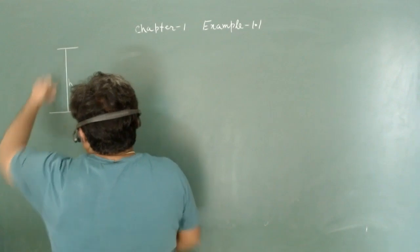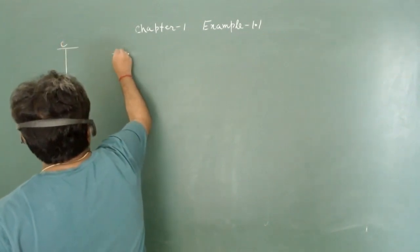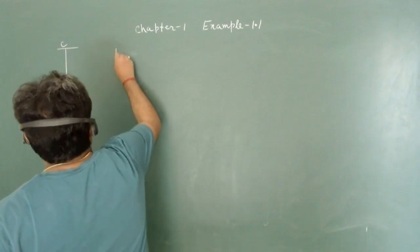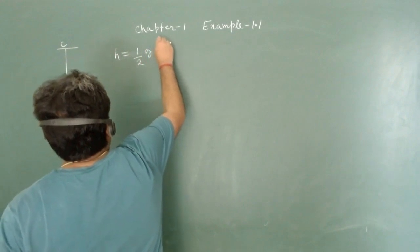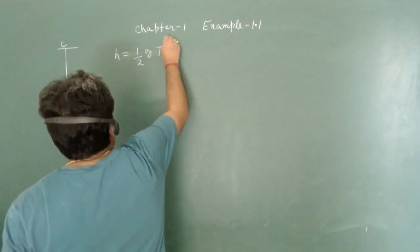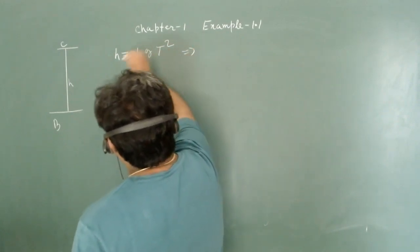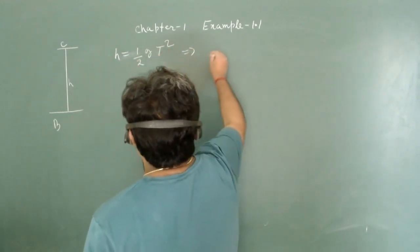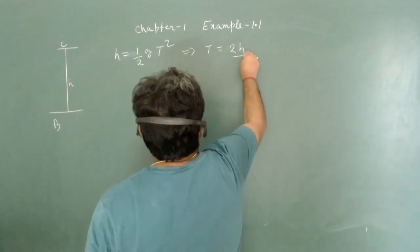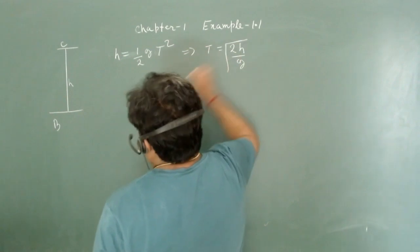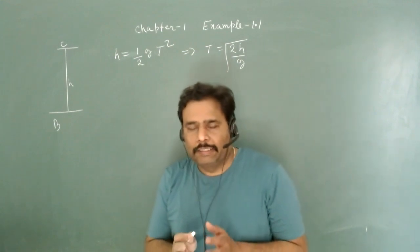We can easily calculate how much time the particle will take to travel from the cliff to the bottom. We use the formula h = ½gT², so the total time capital T is equal to √(2h/g). Now we need to calculate the average distance.